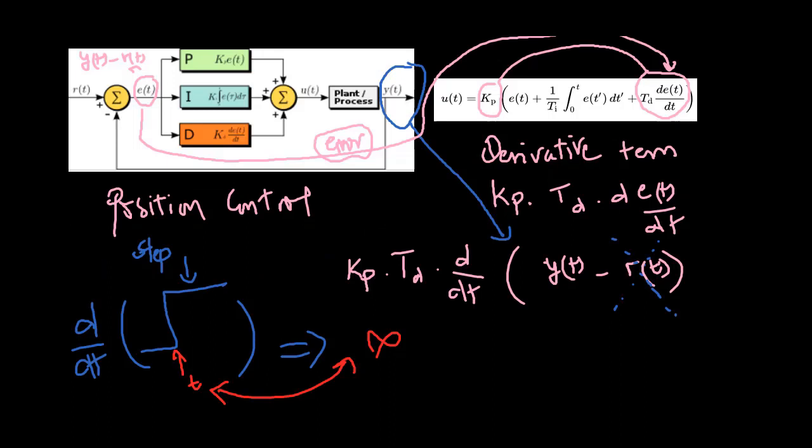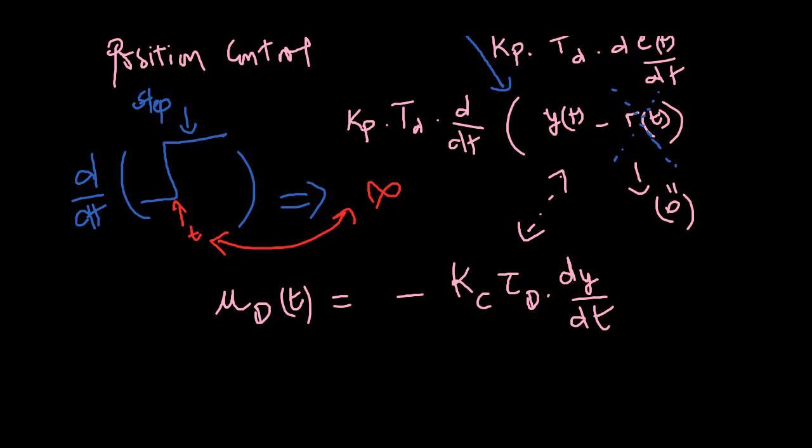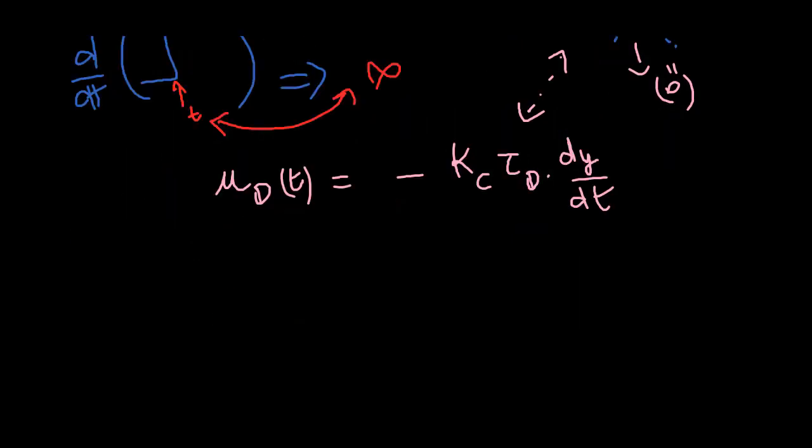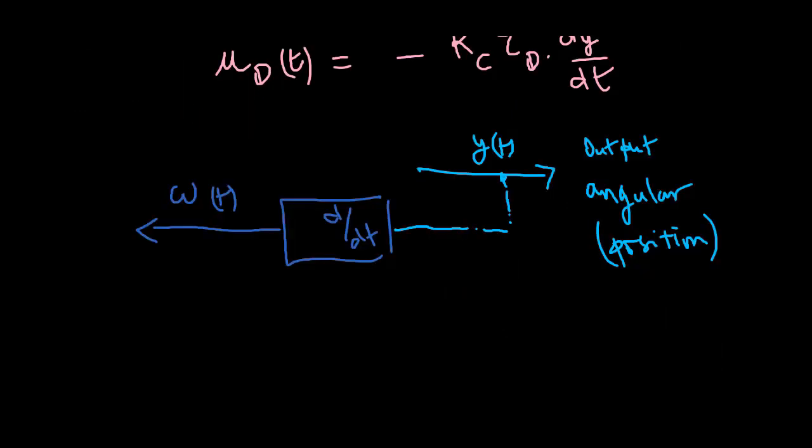Therefore, the control signal UDT from the derivative term is implemented this way. In the AC drive control, the derivative of the output, that means the angular position, is the angular velocity that is directly available for implementation.